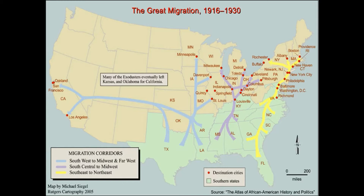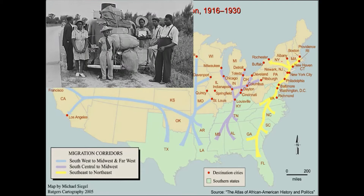They leave the South because there aren't any jobs there. They leave the agrarian, agricultural-based South and move to cities where there are factories, railroads, roads, and automobiles. So they move from the South and go to the North.